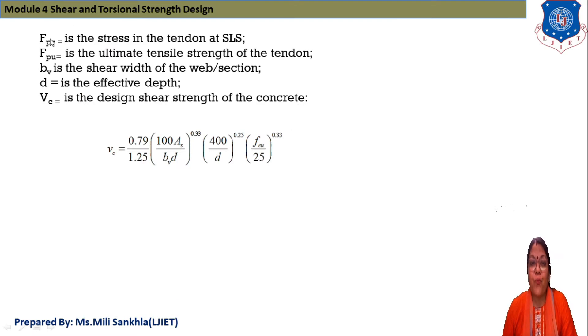What is FPS? Stress in tendon. FPU is the ultimate strength, ultimate tensile strength of tendon. BV is the shear width web section. D is equal to effective depth and VC is equal to design shear strength of concrete. What is the equation of VC if not given? 0.179 divided by 1.25 100 AS BVD raised to 0.33 then 400 divided by effective depth raised to 0.25 FCU that means ultimate concrete strength divided by 25 raised to 0.33.